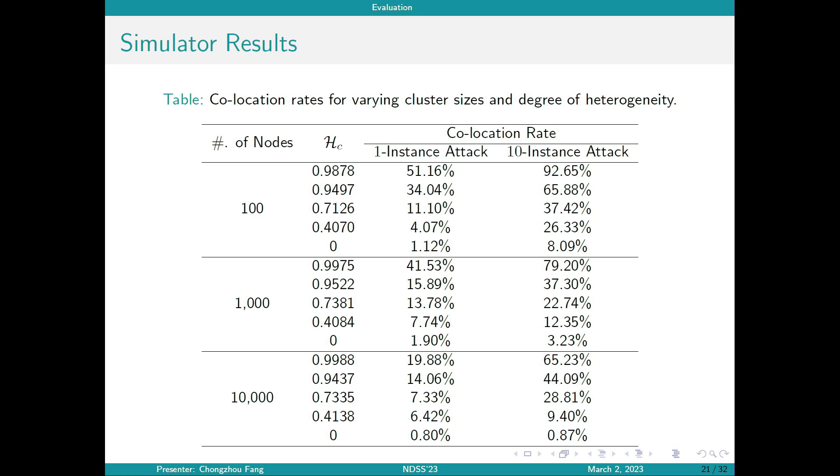The results from the simulator are shown on this page. We can see that generally as heteroscore increases, the collocation threat becomes higher and higher. The risk is higher for smaller clusters compared to larger clusters, as shown in this table.